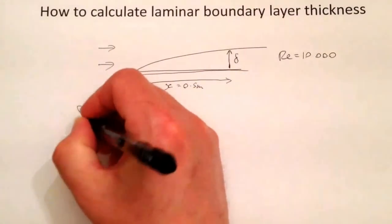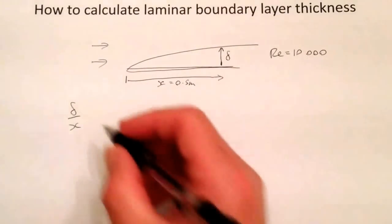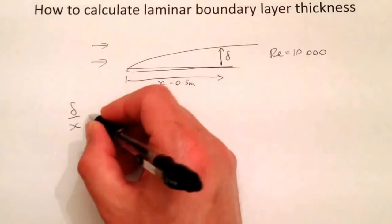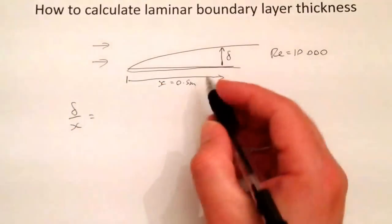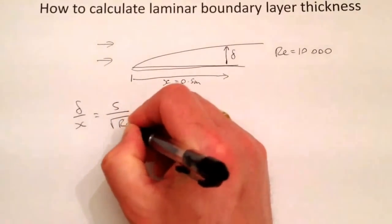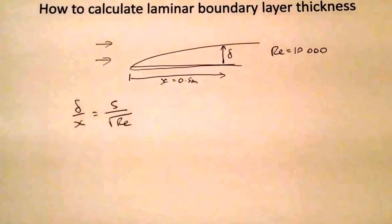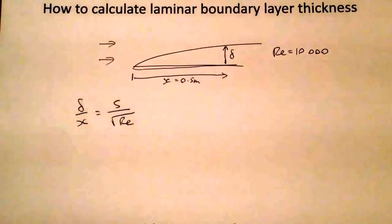There is an equation for it which is actually derived from experimental data. And that is delta, so the thickness of the boundary layer divided by this distance x, is equal to five divided by the square root of the Reynolds number. And that is obtained from experimental measurements.